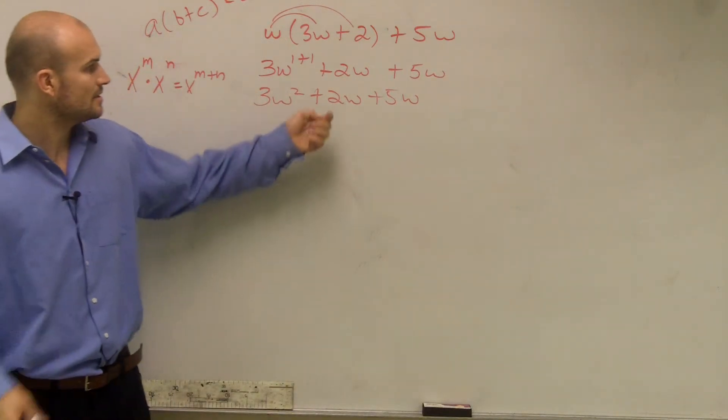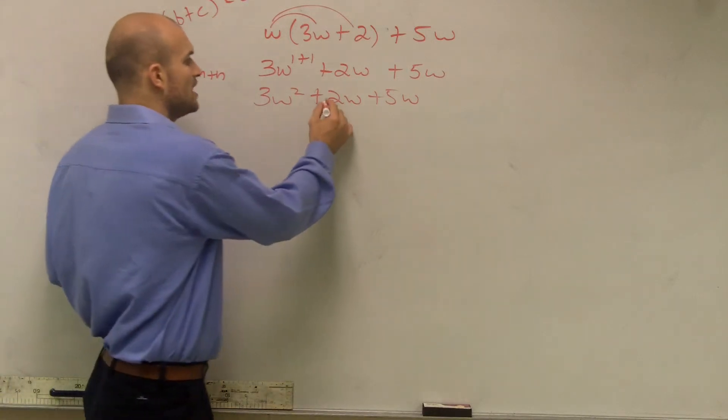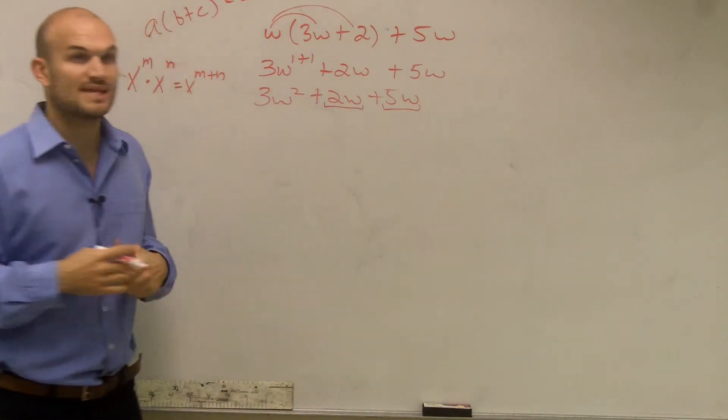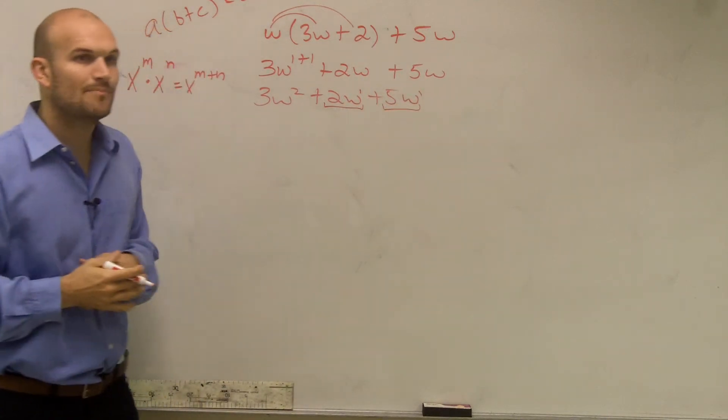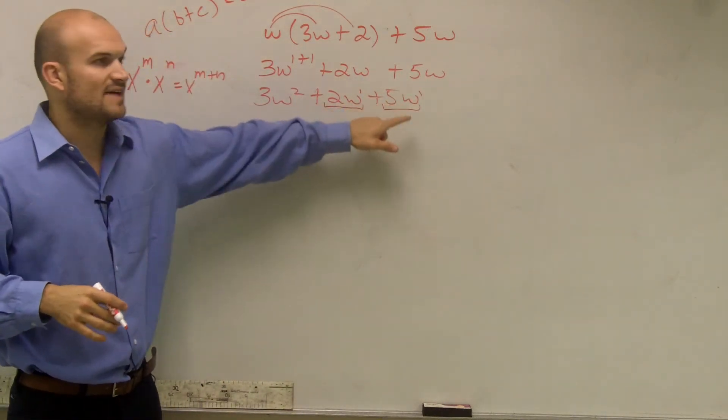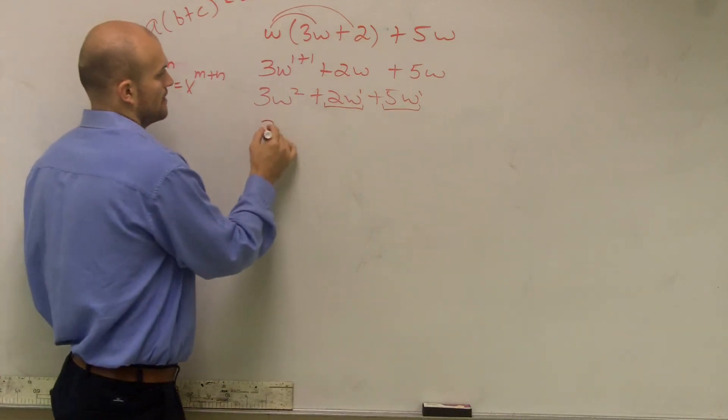So I noticed that this 2w and this 5w are like terms. They have the exact same base and the exact same exponent. So I can combine them. So 2w plus 5w is going to give you 7w.